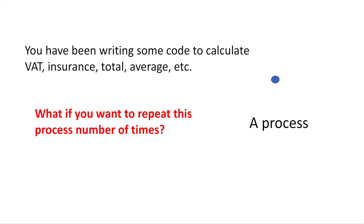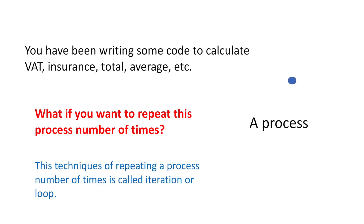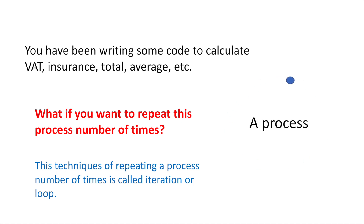The programming language has something called loops, and there are different types of loops. Today we'll focus on one of those loops, something called for loops. The programming language uses this technique and they call it loops, and sometimes you will read the word iteration. Iteration is basically a loop — when you repeat things multiple times. Let's look at the for loop, which is one of the three loops we have in Java.